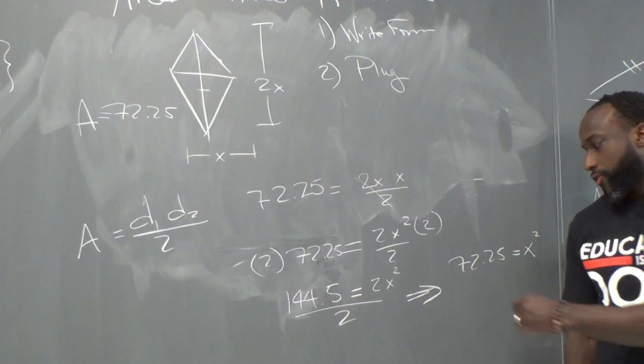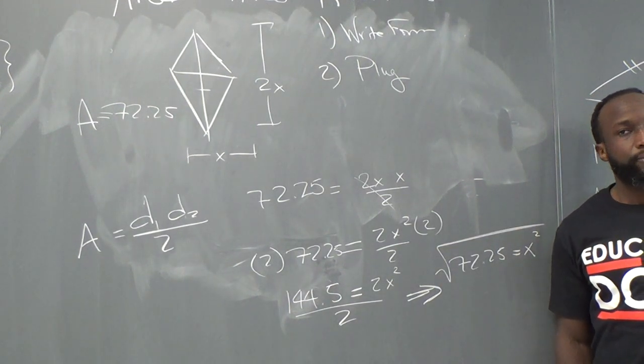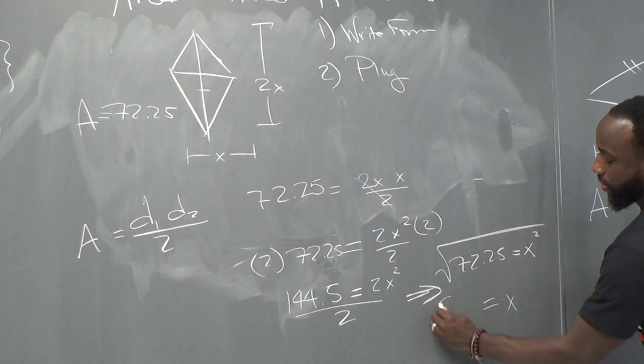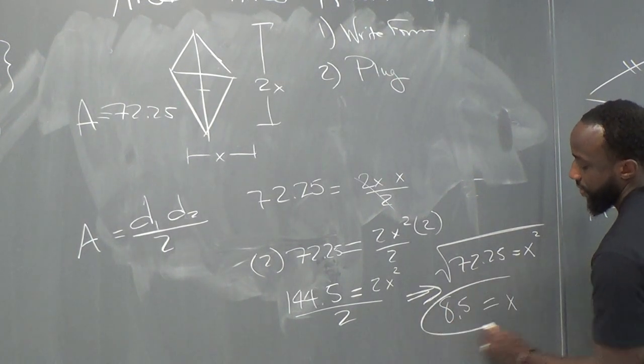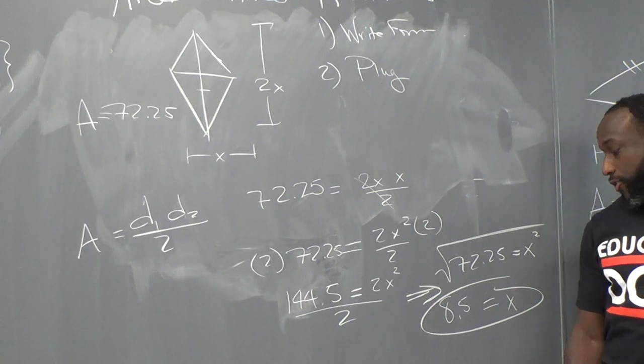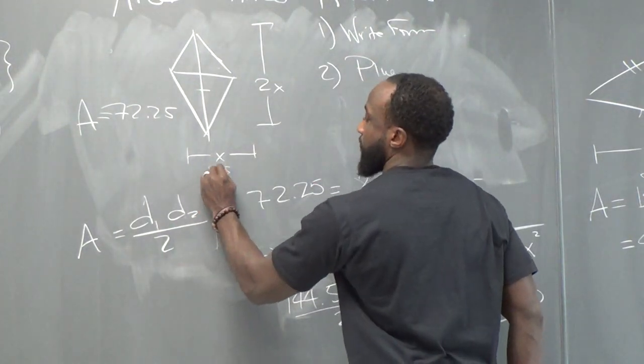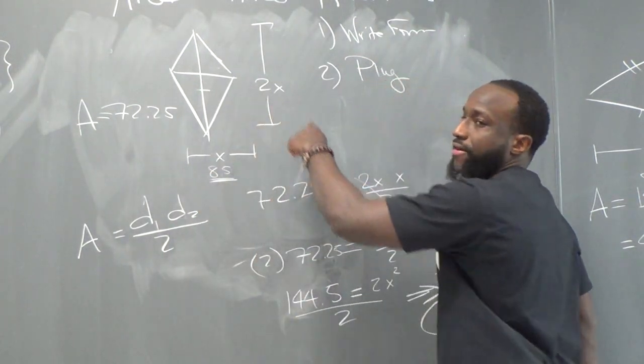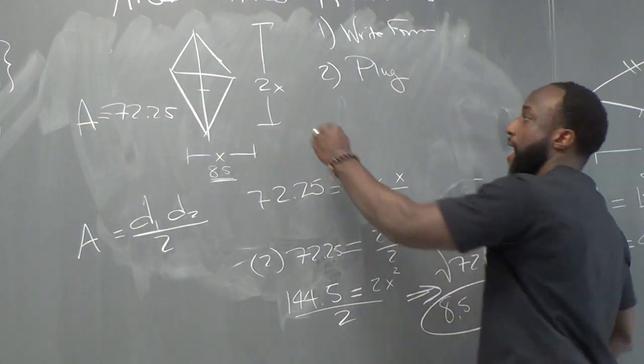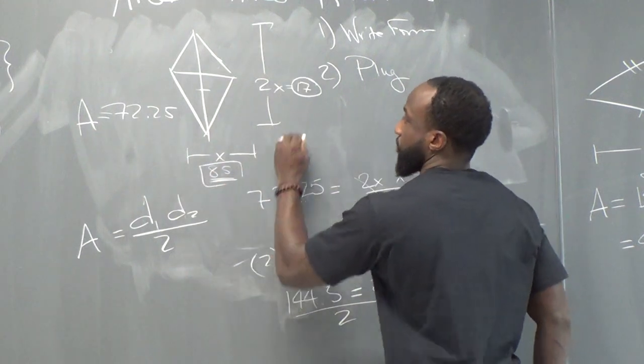Alright, so then what? What's the square root of 72.25? 8.5. 8.5 equals x. Right? So if 8.5 equals x, then this is 8.5 and this is 8.5 times 2. What's 8.5 times 2? 17. 17. Right?